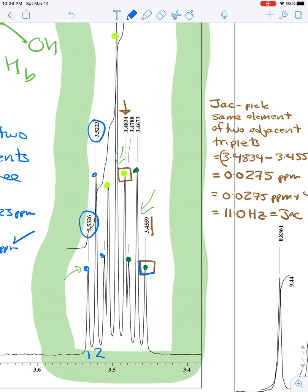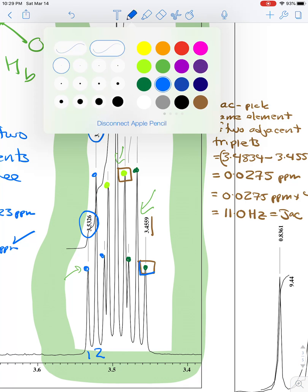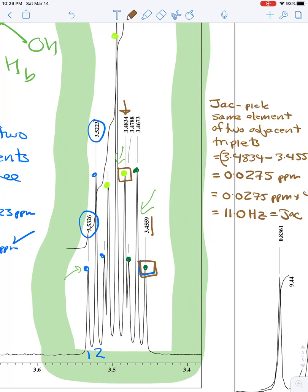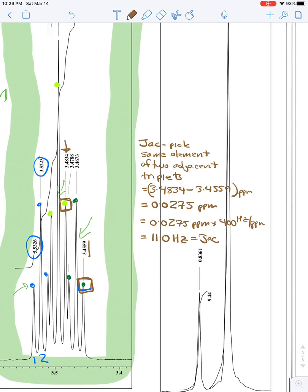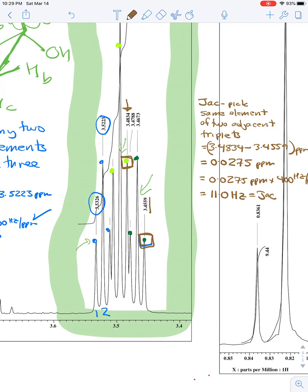And those are the ones that I have boxed in brown. And so again, I'm going to take those two values. Those, by the way, are signals 9, 8, 7, 6. So it's elements 9 and 6 of the triplet of triplets, if anyone is counting.